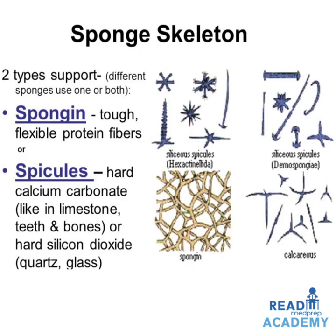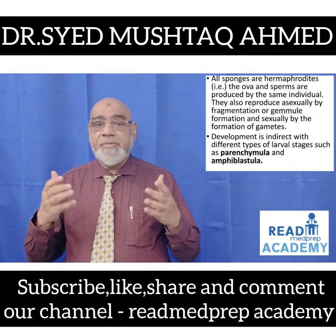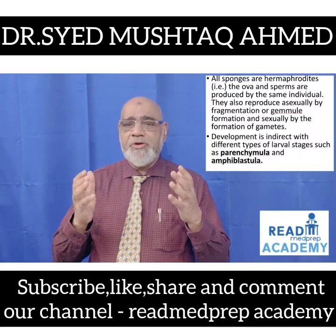In this image you can see the sponge skeleton. There are two types: spongin, which are tough flexible protein fibers, or spicules, which are hard calcium carbonate like in limestone, teeth and bones, or hard silicon dioxide like quartz and glass — siliceous spicules of another type called the demospongiae. Below you can see the spongin and the calcareous spicules.